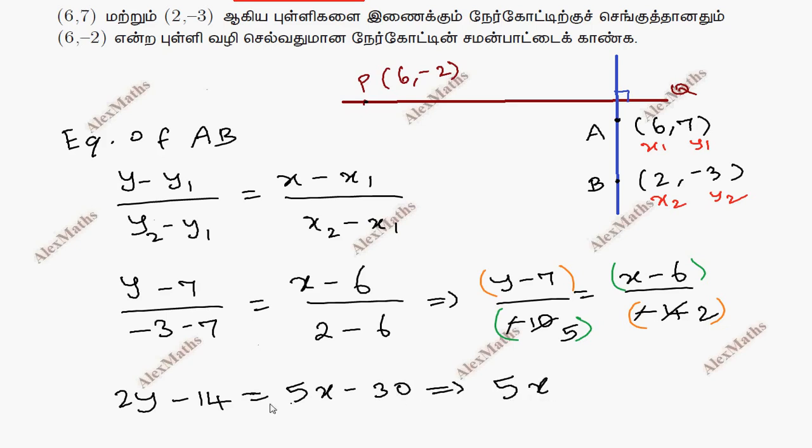So 2y - 14. This is -2y. This is -30 plus 14 is equal to 0. Now, equation of AB.